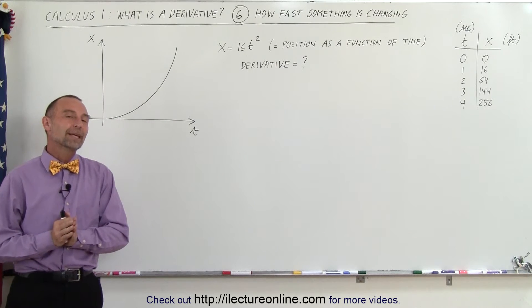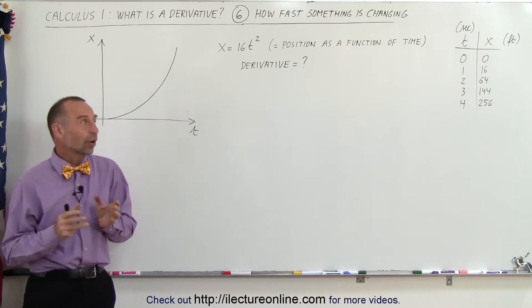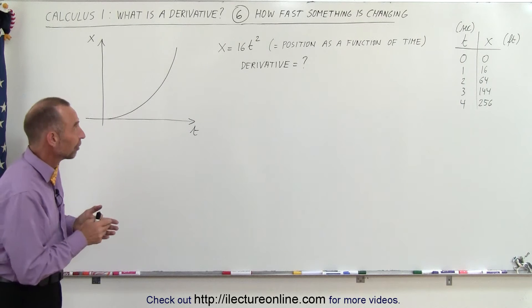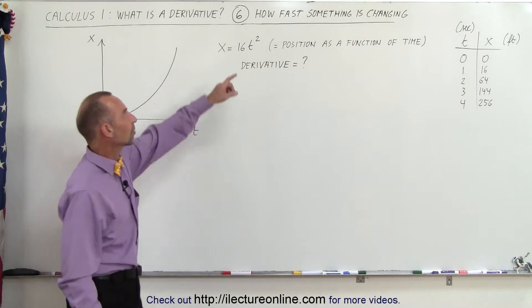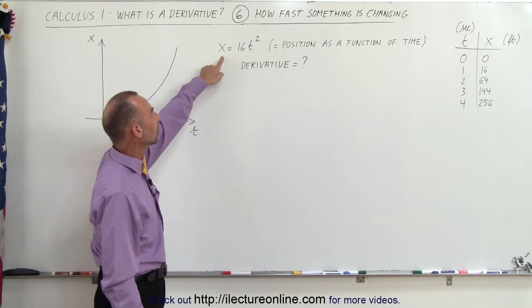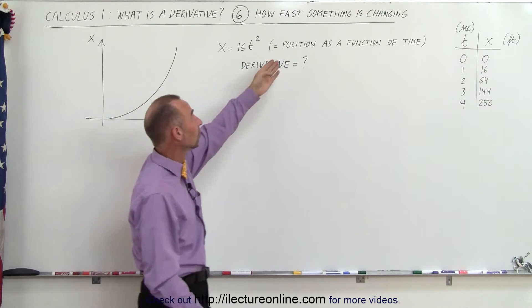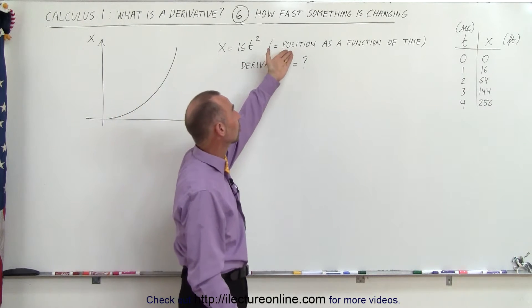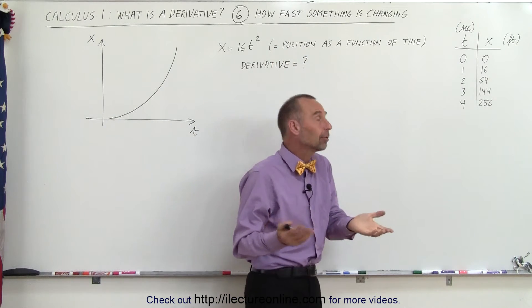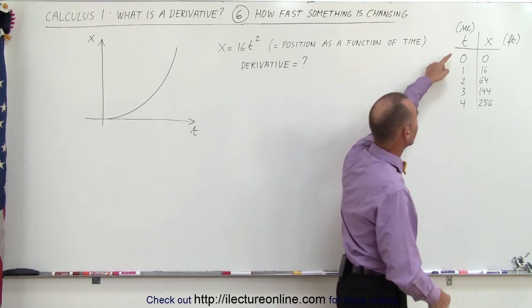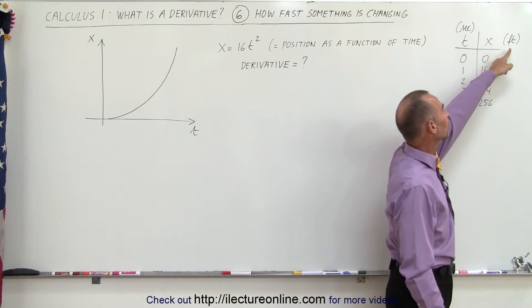Welcome to ElectronLine. Here we're going to take another look at what a derivative is. Let's start with this particular function: x equals 16t squared. Now x represents position and t represents time, so this function represents the position as a function of time. We can draw a table of values for particular values of time, let's say in seconds, and get a position, let's say in feet.